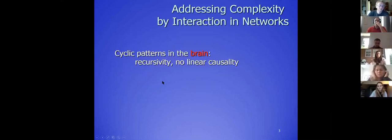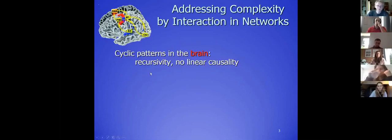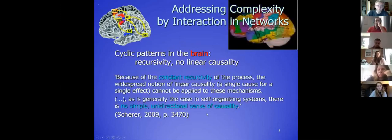This is not a simple issue, because many of you will know that in the brain there are many cyclic patterns. There is a form of recursivity — no linear causality. Simple causality would be just one chain of steps from beginning to end, but it's totally not like that. Therefore you need specific means that are adequate to handle them, and networks really are suitable for that.